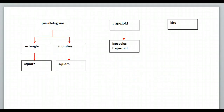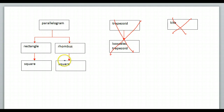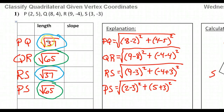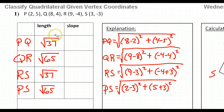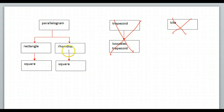Since this is a parallelogram, I know that this is not a trapezoid and it is not a kite. Now we just have to figure out: is it a rectangle, is it a rhombus, and if so, is it a square? We can eliminate one of these right now. This is definitely not a rhombus — a rhombus has four equal sides, and these sides are not all the same. So it's not a rhombus, which means it is also not a square.